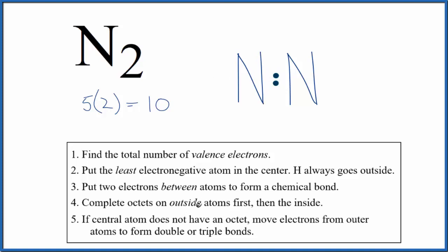Next, let's complete the octets for each nitrogen atom. But we immediately run into a problem. We've used 2, 4, 6, 8, 10. That's all we have, and we've not completed the octet for the nitrogen here.